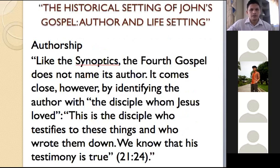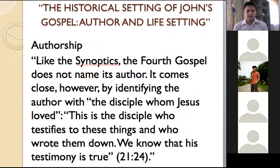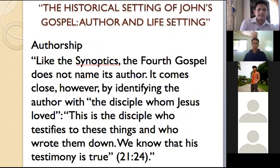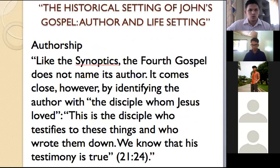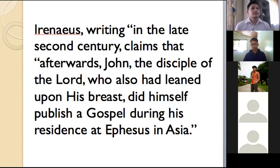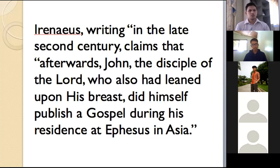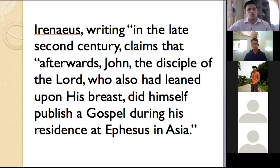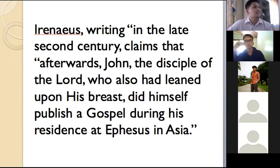The historical setting — who is the author? The gospel does not name its author but comes close by identifying the author as the disciple of Jesus Christ whom he loved. 'This is the disciple who testifies to these things and who wrote them down — know that this testimony is true.' This is extra-biblical literature. The late second century claims that John, the disciple of the Lord, who also leaned upon his breast, himself published a gospel during his residence in Ephesus. So Irenaeus wrote that John, the disciple of the Lord, wrote something and published it, and he was residing in Ephesus — that's why the Church of John is also in Ephesus.